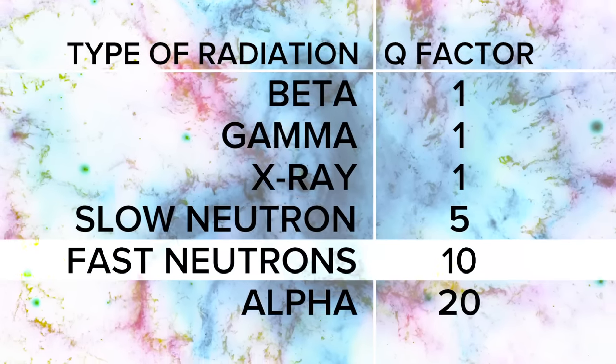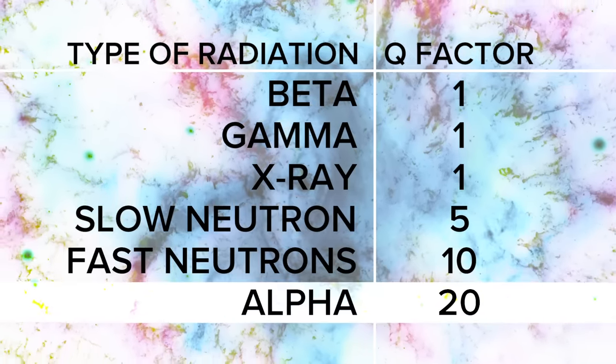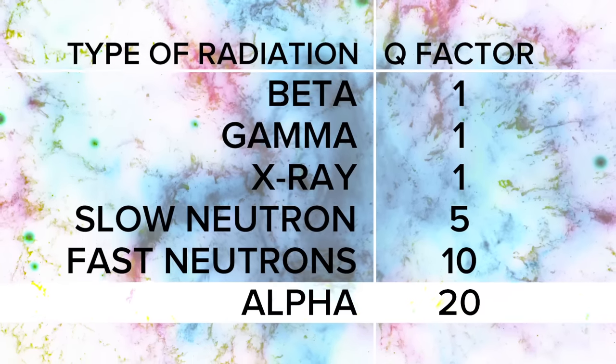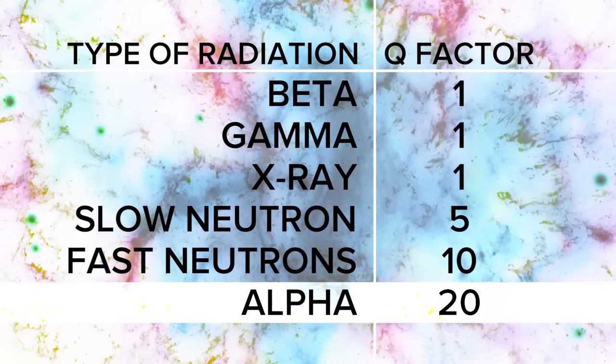Fast neutrons have a Q of 10, and alpha particles have a Q of 20, which means that they do more biological damage than other kinds of radiation.